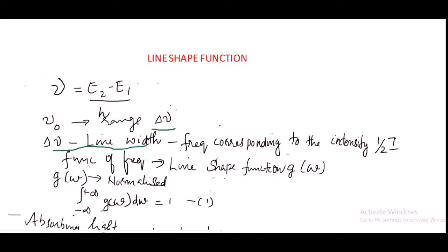The line width is defined as the frequency corresponding to the intensity half I, that is, the frequency corresponding to half of the maximum intensity. We can say that the atoms can interact with the radiation over a range of frequency, and the strength of the interaction is a function of frequency.